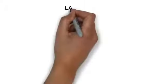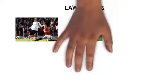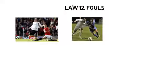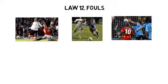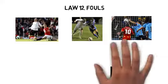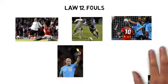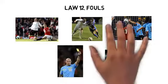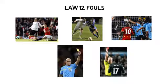Law 12: fouls. A foul is when a player breaks a rule like using hands, pushing, tripping, pulling, etc. If the referee deems it dangerous, he may call it a foul. There are minor and major fouls. The referee decides and may give a yellow card or red card if he or she believes it merits a warning or ejection from the game.